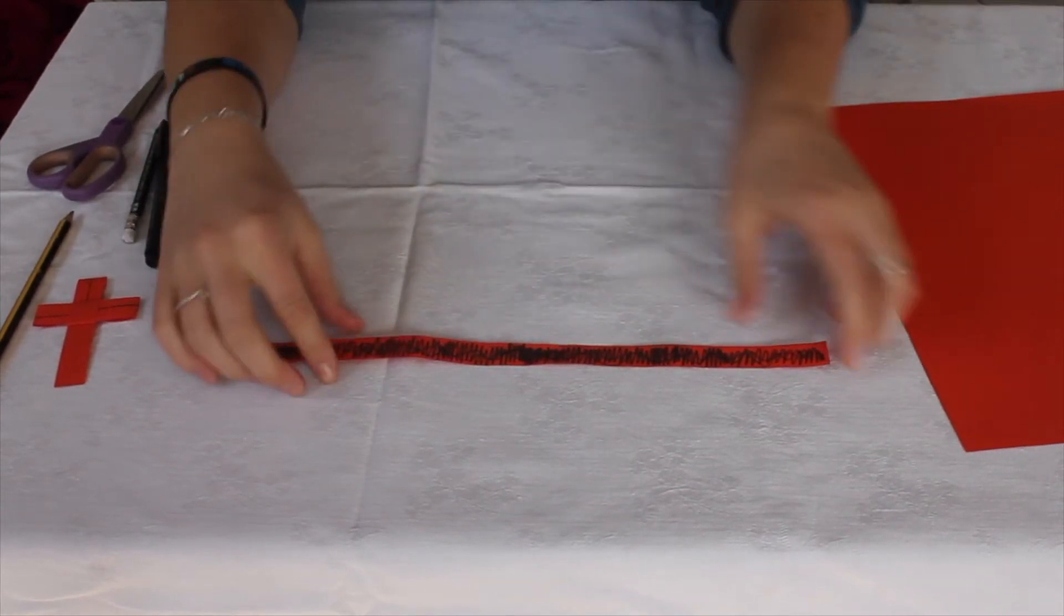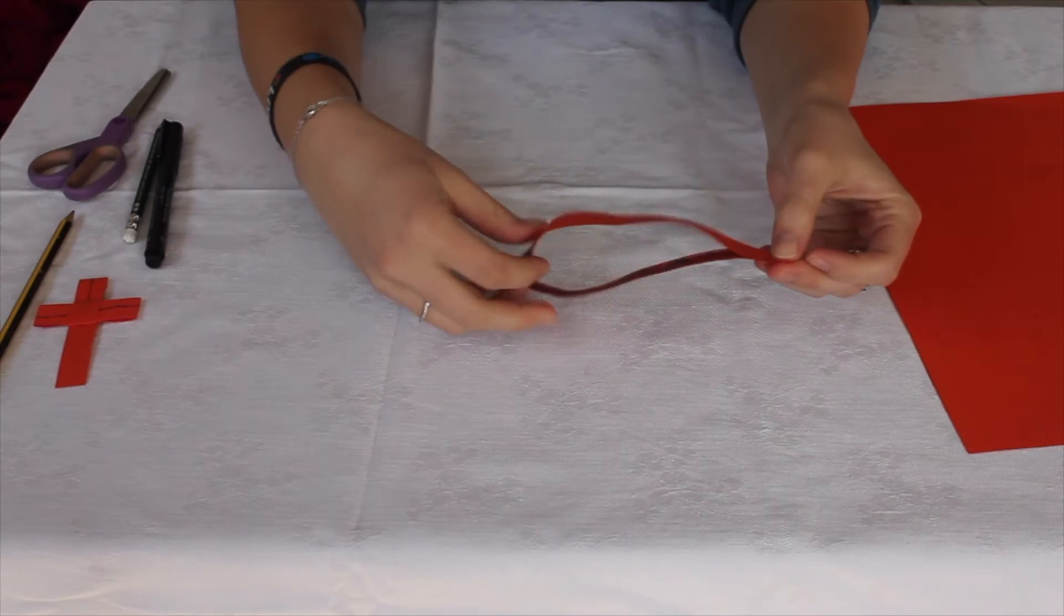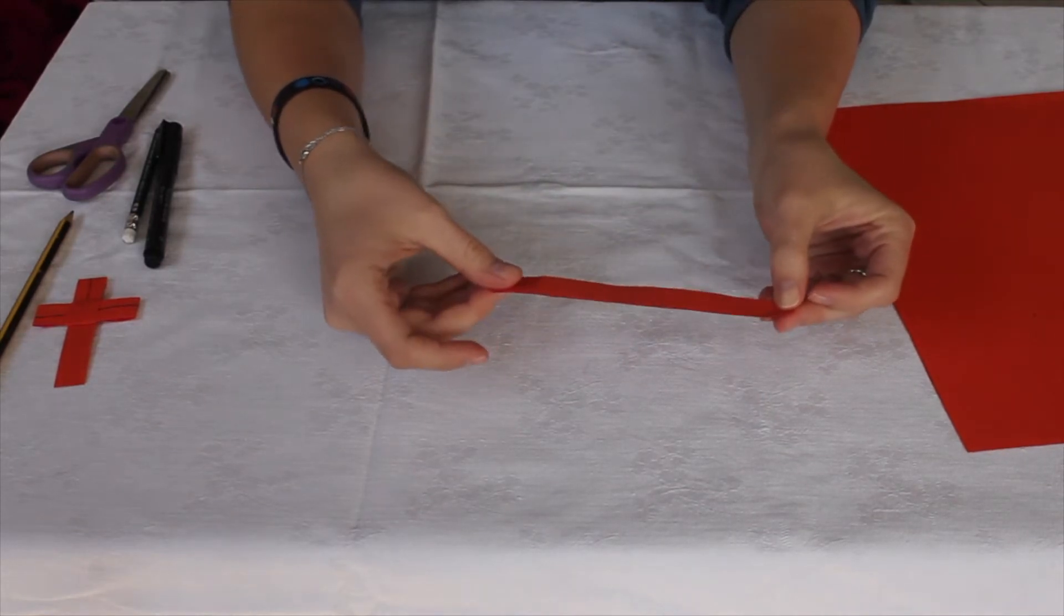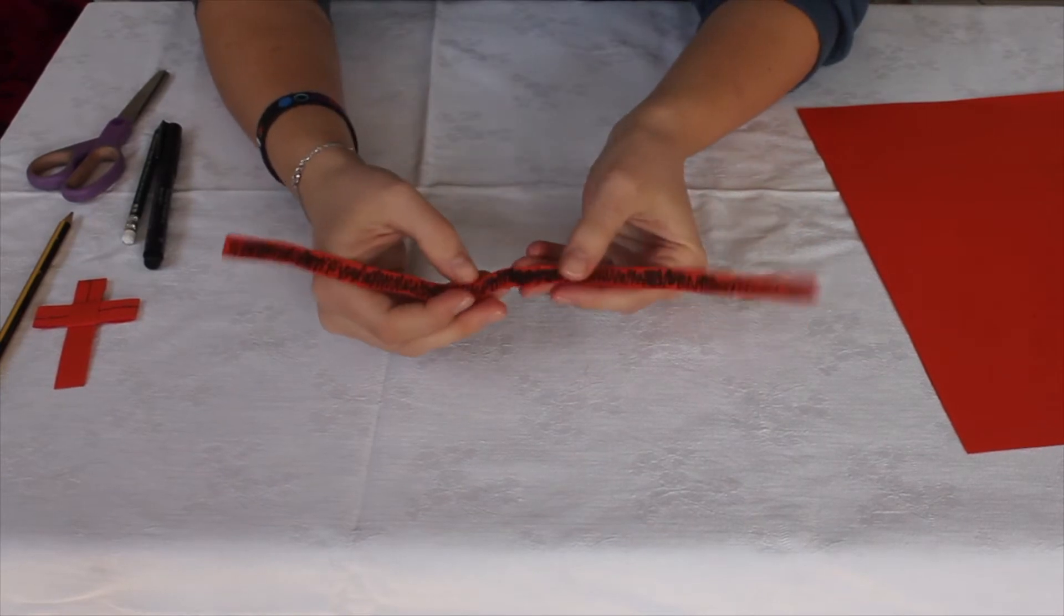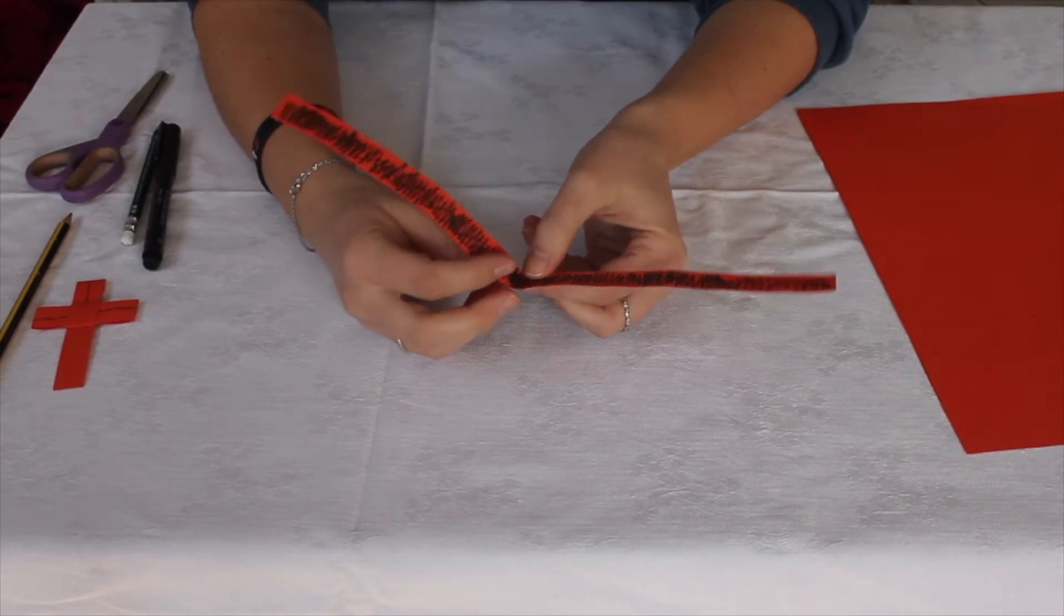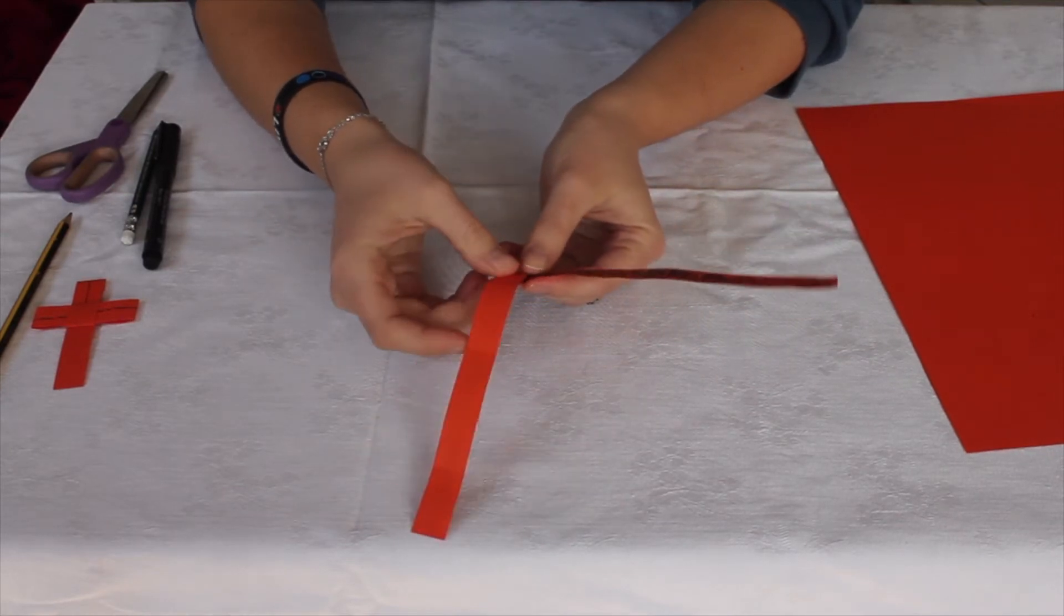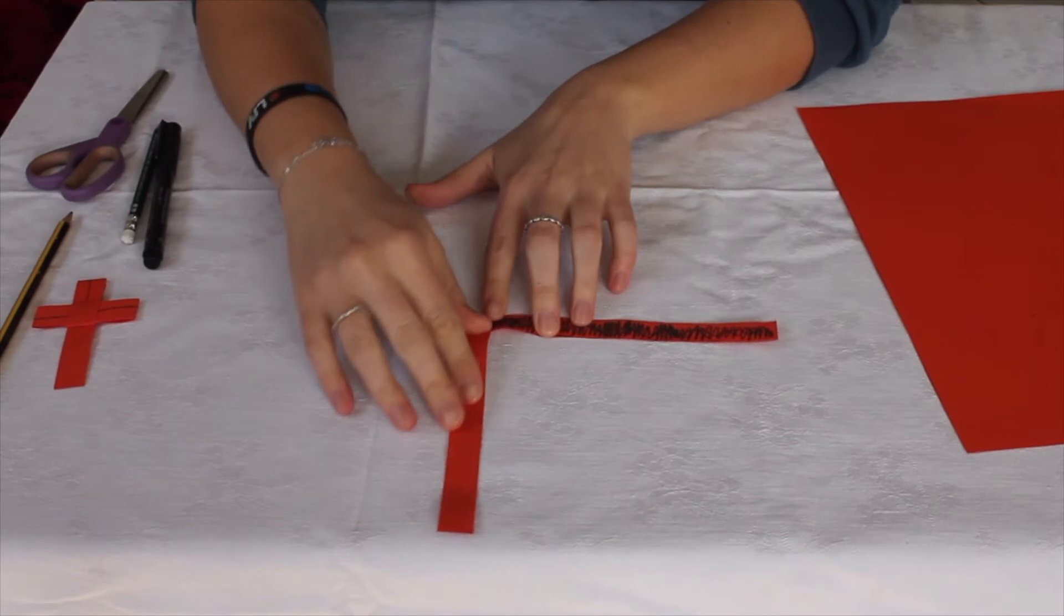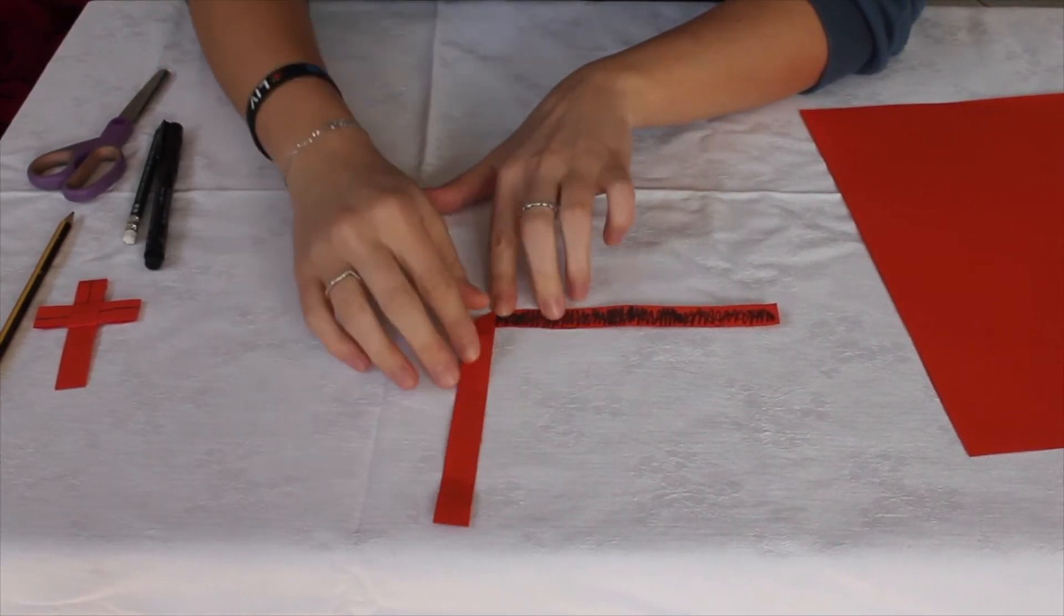So first of all if you take your piece of paper and just find the halfway point which will make things a little bit easier. So first of all at this roughly halfway point we are going to fold the piece of paper like so and that will make us a right angle.